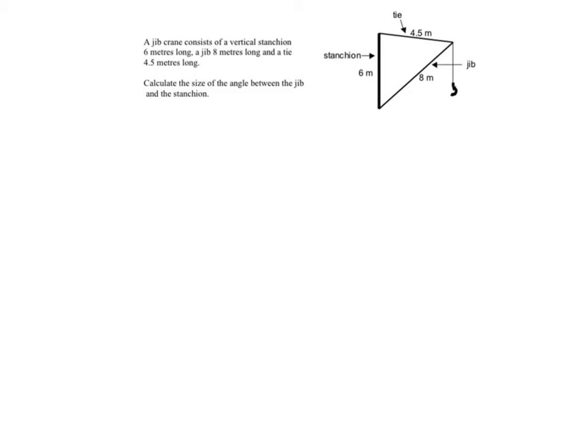Okay, so this time our angles are not labelled, but we can label those ourselves. If that's the side S, then this is angle S. If that's side J, then this is the angle J. And if that's side T, then this is the angle T. So if I'm looking for the angle between the jib and the stanchion, then I'm looking for this angle here. So I'm looking for cos of T.